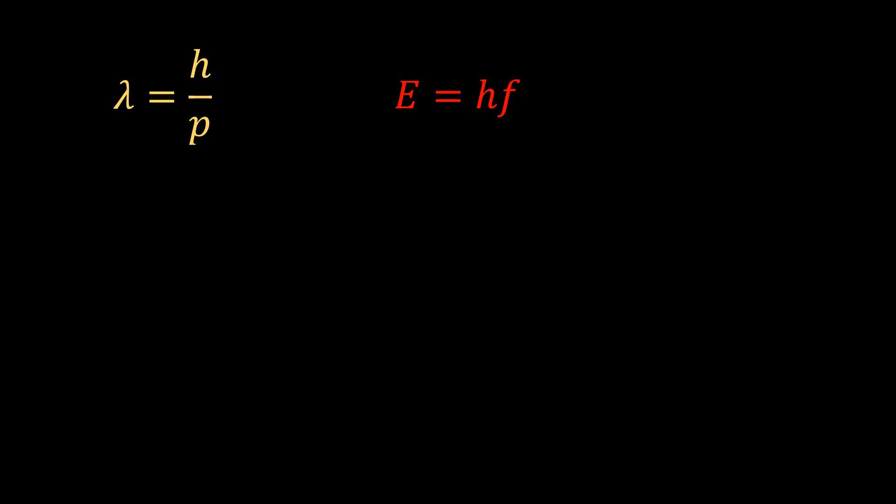So these equations for celestial objects were, therefore, lambda equal to G over P and E equal to GF.